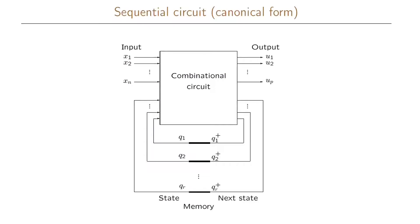This is our canonical form of our sequential asynchronous circuit. Similar as before, we have n inputs, we have p outputs, our next state will be functions of the inputs and the current state, and our output will also be functions of our current state and the input.